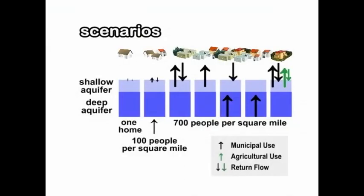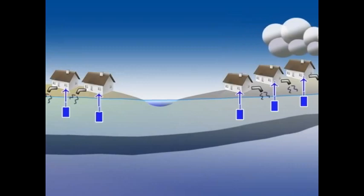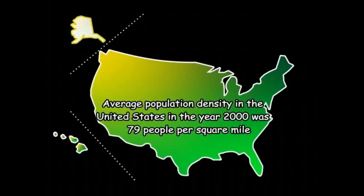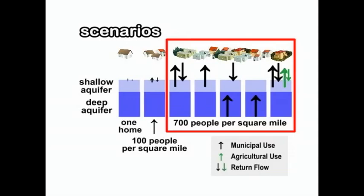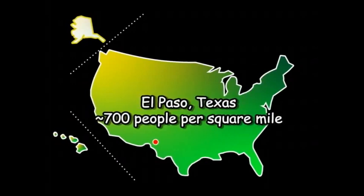We evaluate a number of different scenarios. First, we consider the impact of only one home pumping near the stream from the shallow aquifer. Then we evaluate pumping from the shallow aquifer at many homes throughout the stream basin in a rural setting with 100 people per square mile — similar to the year 2000 average US population density of 79 people per square mile, and comparable to Tucson, Arizona and Sioux City, Iowa. Finally, we consider a setting with 700 people per square mile, similar to the population density of Buffalo, New York and El Paso, Texas in the year 2000.